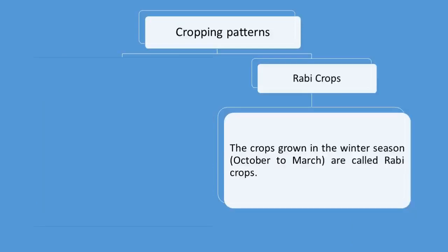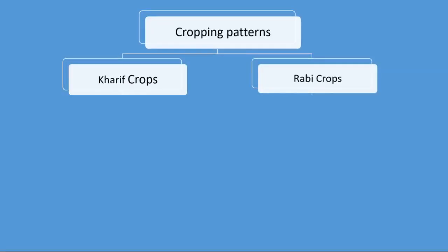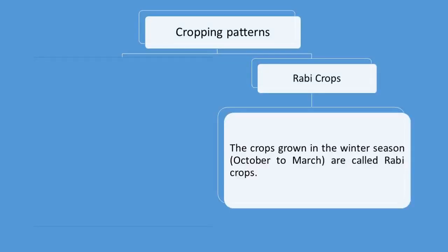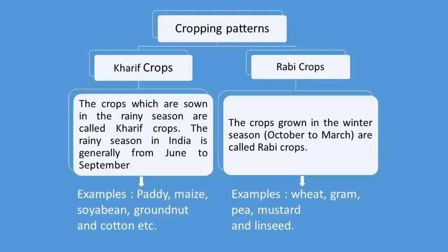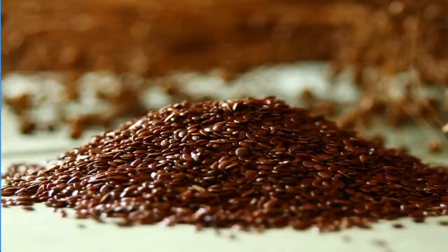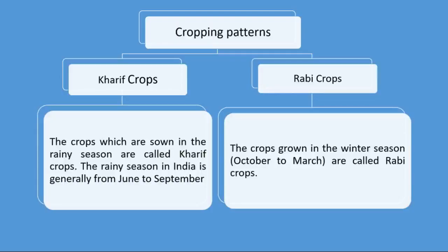The next cropping pattern is Rabi crops. What are Rabi crops? The crops grown in the winter season — October to March — are called Rabi crops. The examples of Rabi crops are wheat, gram, pea, mustard, and linseed, and so on. The examples of both Kharif and Rabi crops are shown on your screen. Here is a complete mind map of the cropping pattern in front of you.